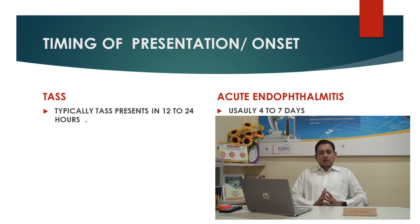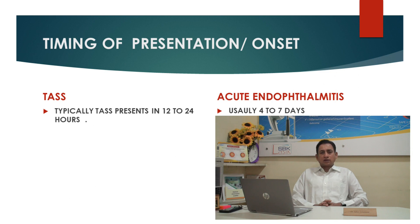Let us compare each clinical feature of TASS and infectious endophthalmitis in detail. Regarding onset: TASS usually happens between 12 to 24 hours after surgery, while acute endophthalmitis usually develops between 4 to 7 days. However, certain fulminant endophthalmitis like Pseudomonas or Bacillus cereus endophthalmitis can develop within 48 hours, but their presentation is usually later compared to TASS.